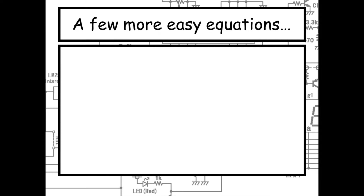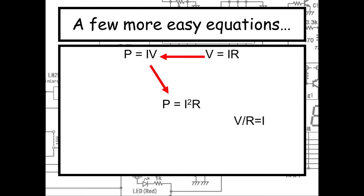A few more easy equations. From the previous slide we have P equals IV, and from IGCSE we know V equals IR. By substituting V equals IR into P equals IV, we get P equals I squared R. Also by rearranging V equals IR, we get I equals V over R, and substituting into P equals IV gives us P equals V squared over R. These are two very useful equations for solving power problems when you have one unknown — maybe you don't know the current or the voltage.